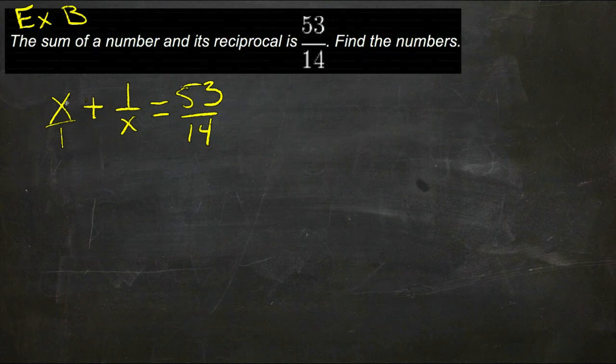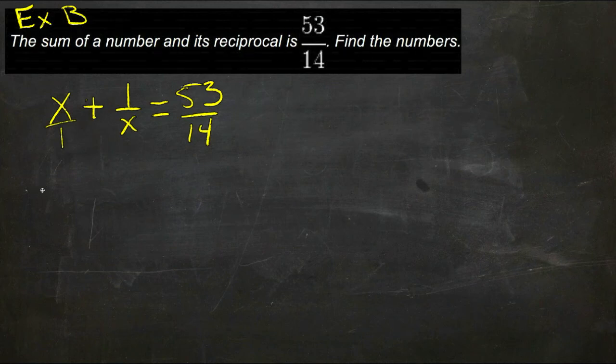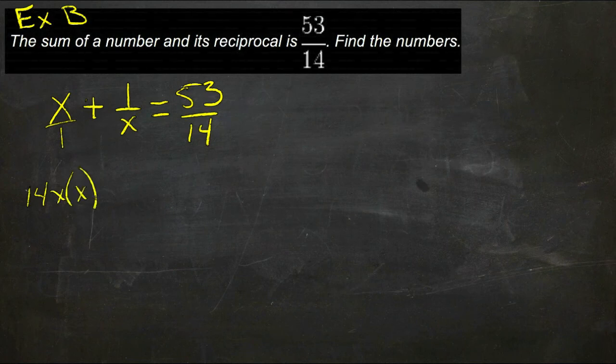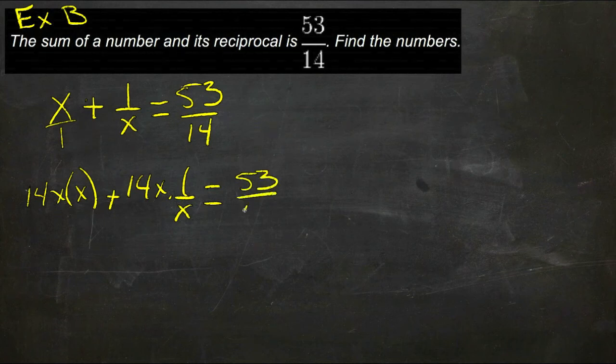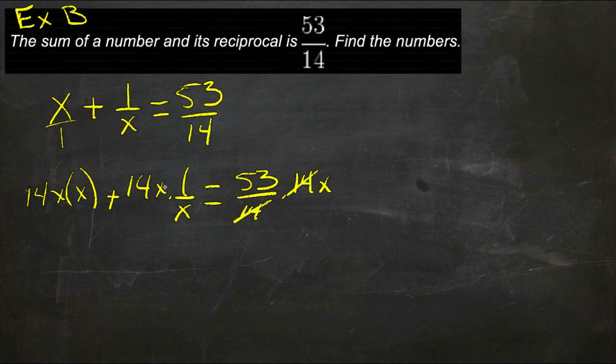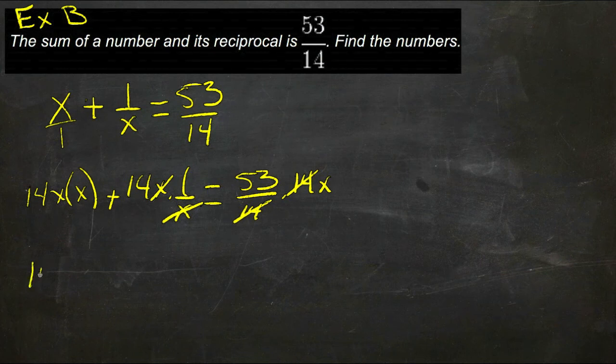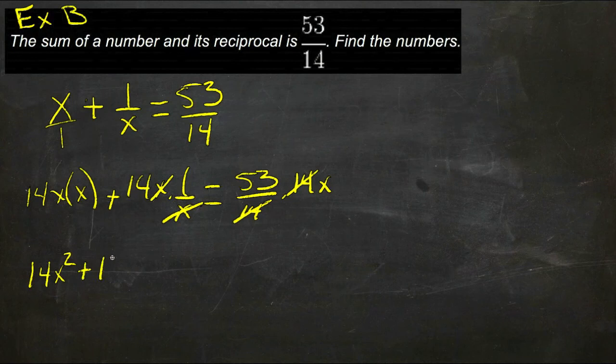So if we multiply our first term by 14x, we'll get 14x times x. And then our second term, we'll get 14x times 1 over x. And then the other side of the equation, we'll have 53 over 14 times 14x. Here we can cancel the 14s, here we can cancel x's, and here we can't cancel anything. So we reduce now, and we get 14x squared plus 14 times 1, which is 14, equals 53x.